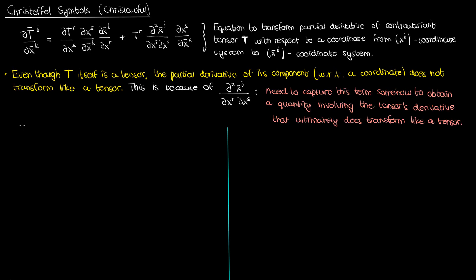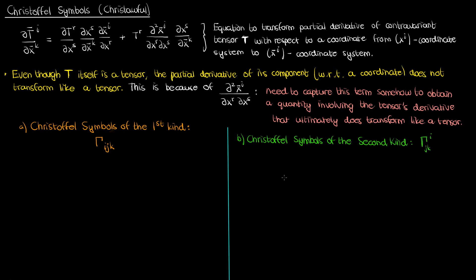There are two kinds of Christ-awful symbols, which are pretty aptly named. The first is the Christ-awful symbol of the first kind, and the second is the Christ-awful symbol of the second kind. The first kind is denoted by gamma with three subscripts i, j, and k, while the second kind is denoted by gamma with a single superscript i and two subscripts j and k. The second kind symbols are probably a bit more important because of their more widespread applicability, but the first kind symbols are also pretty important.